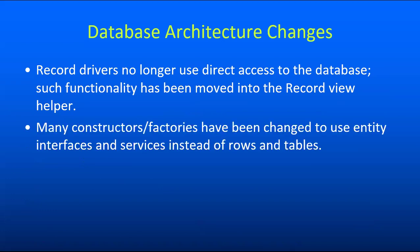Obviously with all of this code getting moved around, we've had to change a lot of constructors, factories, and method signatures to use these new entity interfaces and services instead of the old rows and tables. In 10.0 we tried to make this as non-disruptive as possible — a lot of things are going to still work because the row classes implement the entity interfaces, and we didn't go too crazy adding type hints everywhere. A lot of the changes are just in comments. We may take this a little further in release 11.